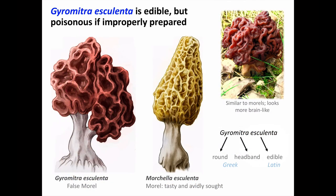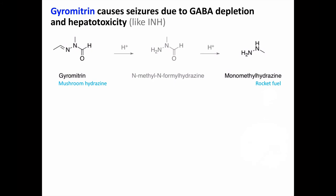Here is Gyromitra esculenta, which is edible as the species name indicates, but poisonous if not prepared properly. Gyromitra species, or false morels, look similar to Morchella (the true morels), but are more irregularly shaped and brain-like. The toxin in Gyromitra mushrooms is gyromitrin, a hydrazine compound which converts to monomethylhydrazine — reactive enough to be used as rocket fuel. Gyromitrin can cause seizures and hepatotoxicity through the same mechanism as isoniazid. If you cook Gyromitra mushrooms properly, allowing the hydrazines to boil off, they are no longer poisonous.